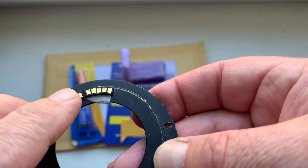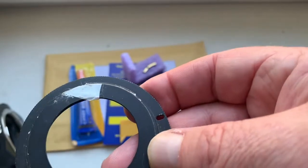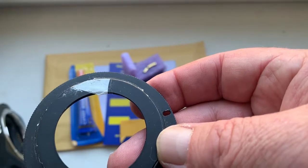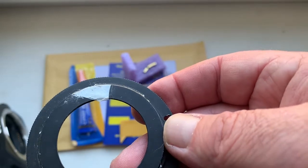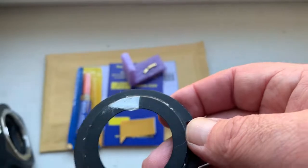Mark the borders of the chip, remove the chip, remove the double-sided adhesive tape, clean the black paint, degrease, and then install using superglue gel.